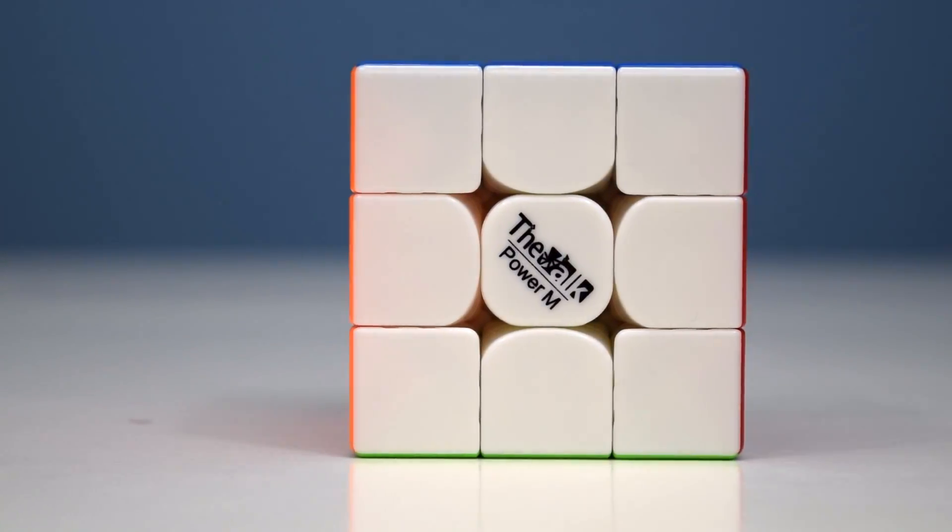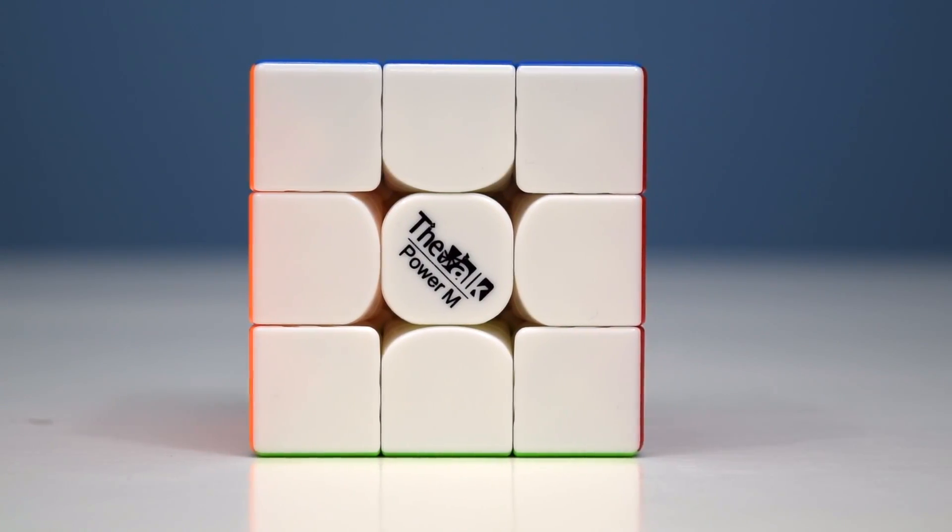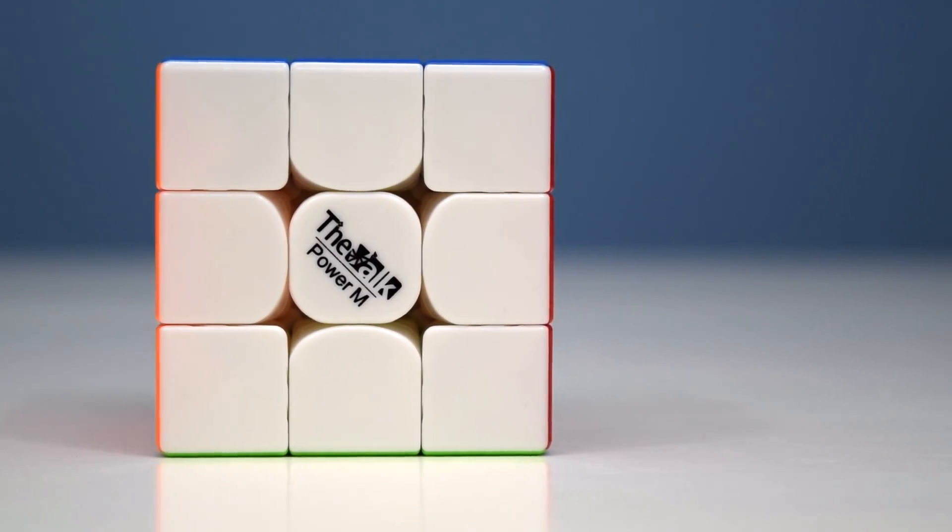This is the Valk Power M, factory magnetized by Qi Yi. It's kind of like a Valk version 2, but the mechanism is barely changed.